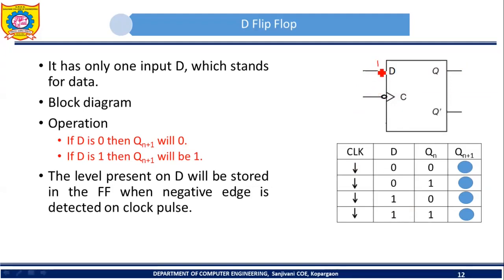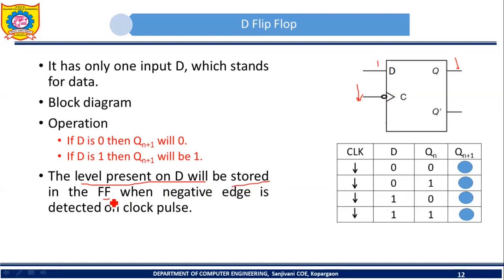Now let's assume that D is 1. If I give input 1 to the D flip-flop, then when a negative edge is detected on the clock pulse, the output of the D flip-flop is going to change as per the input. So here the input is 1, and that's why the next state of the D flip-flop will also be 1. So whatever level is present on D — whether it is 0 or 1 — that level gets stored in the flip-flop when the negative edge is detected on the clock pulse.